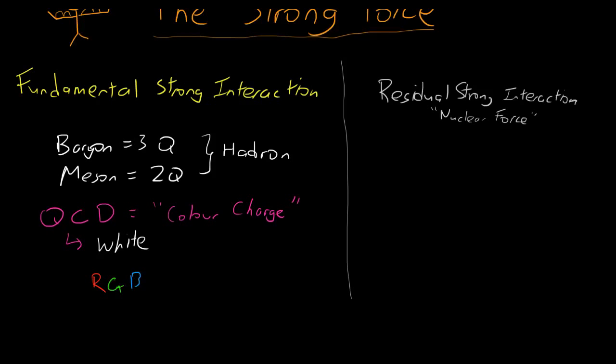So in a baryon, you have to have one red, one green, and one blue to make a red baryon to get the overall color charge of white. But how do we make a meson with two quarks? Because red and green, or red and blue, or green and blue, you can't really make white.